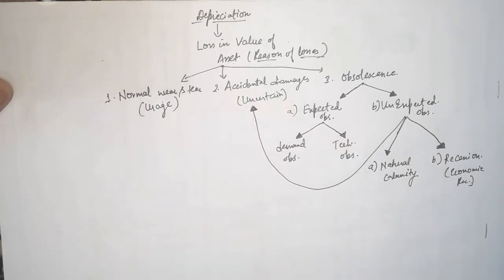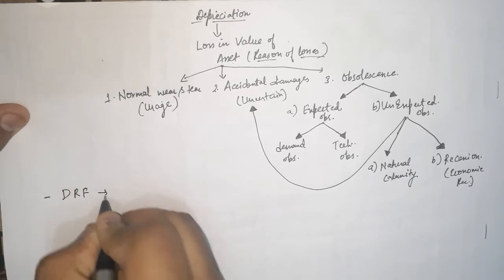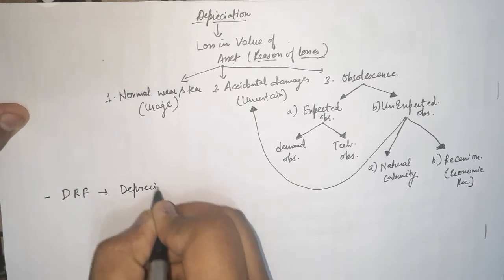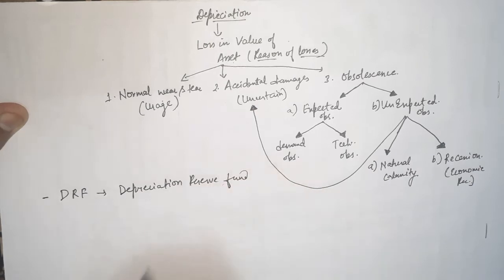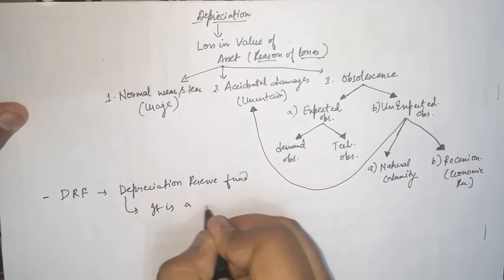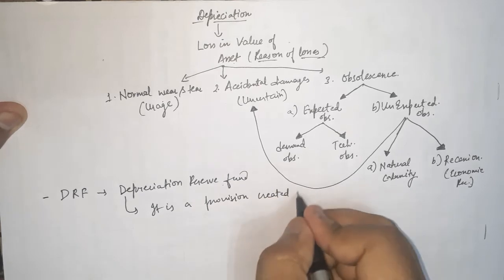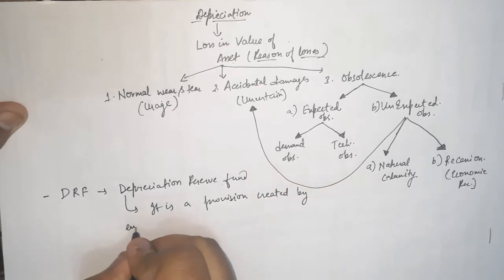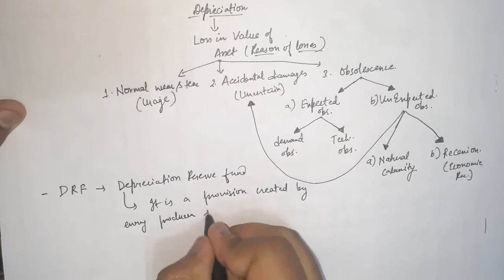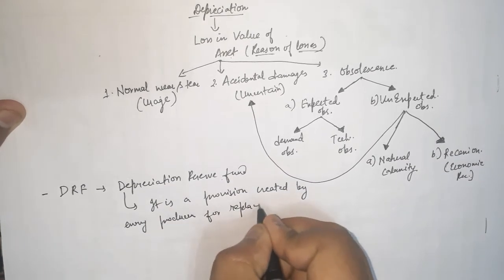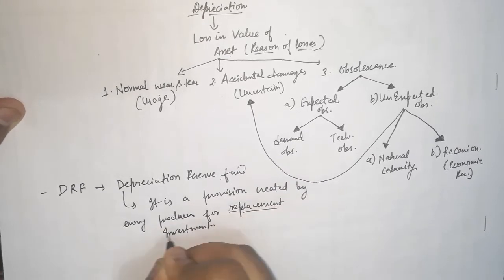Now the next topic for today is DRF — Depreciation Reserve Fund. This fund is simply a provision created by every producer for replacement investment. Two terms arise here: what is this replacement investment, and what is this provision?